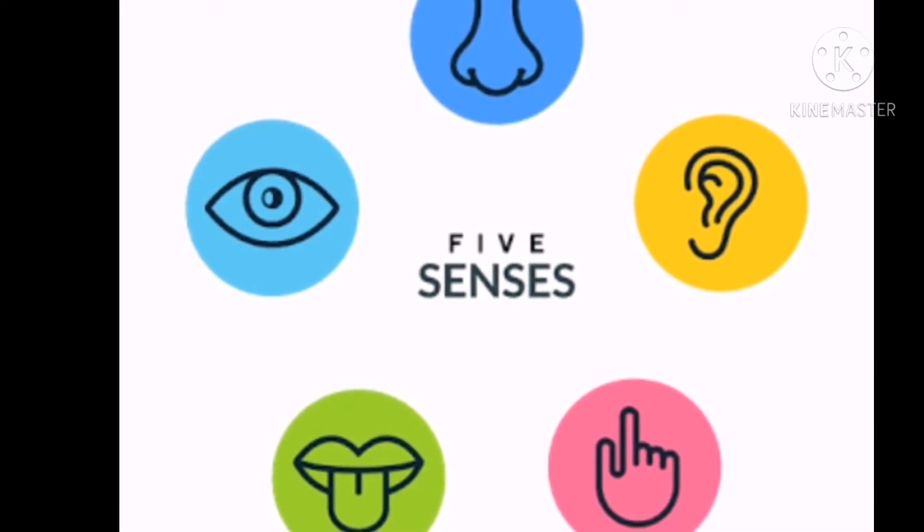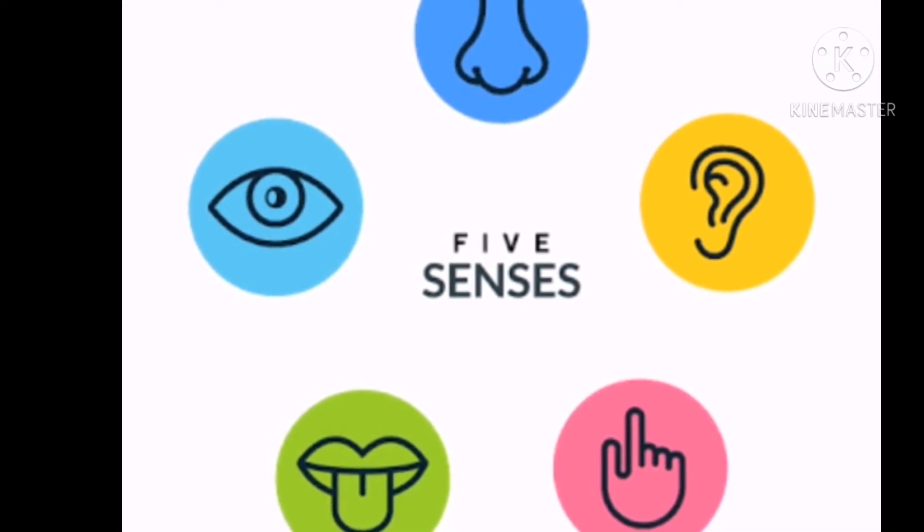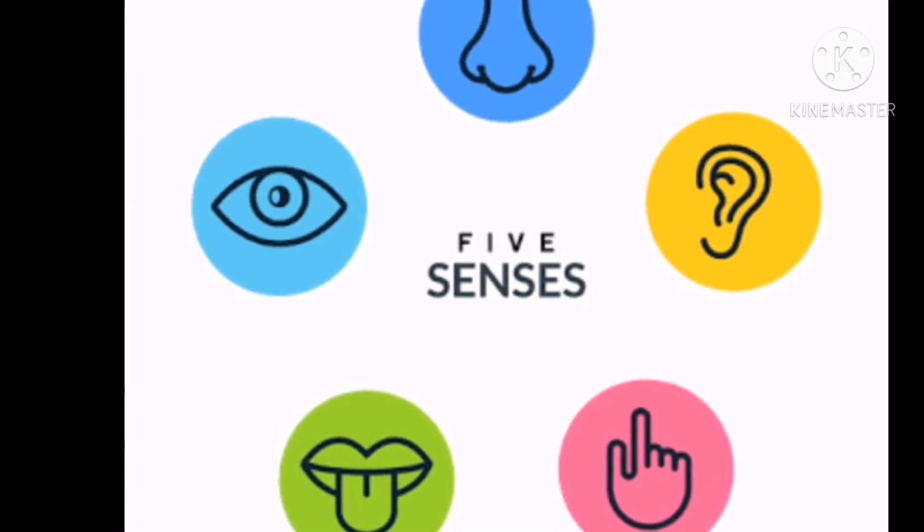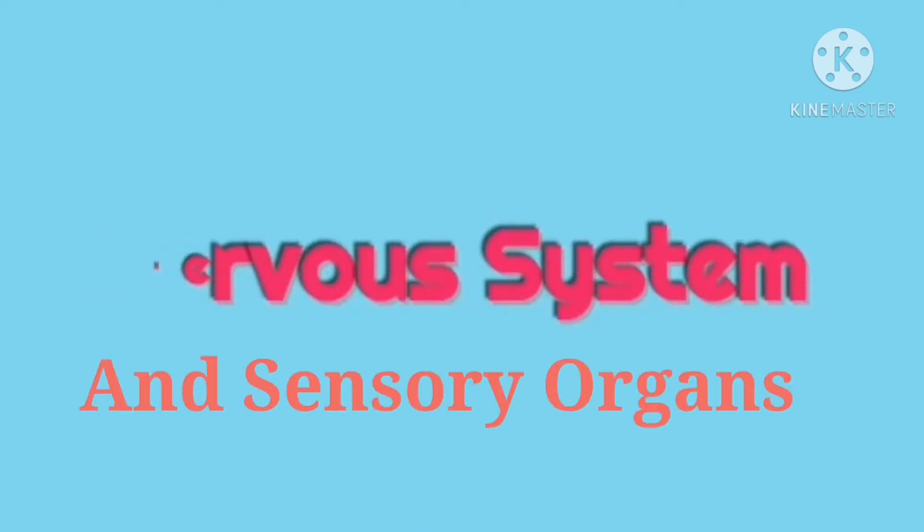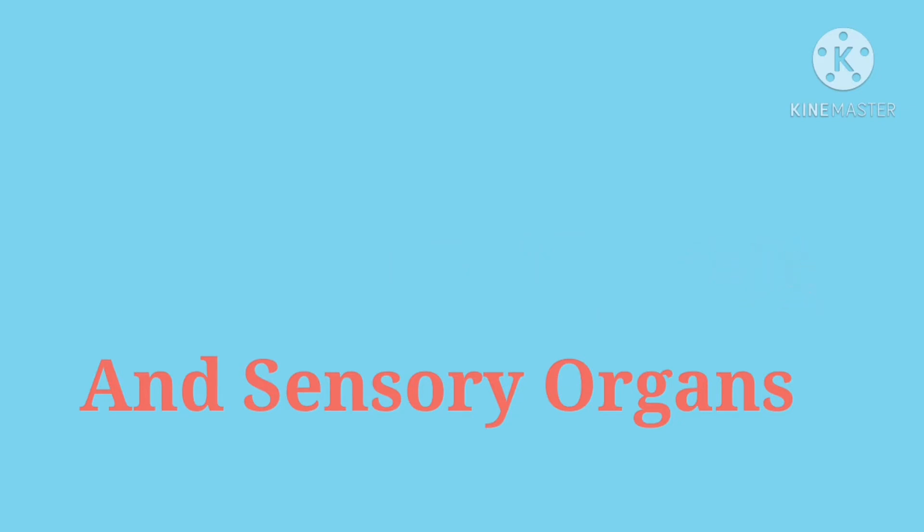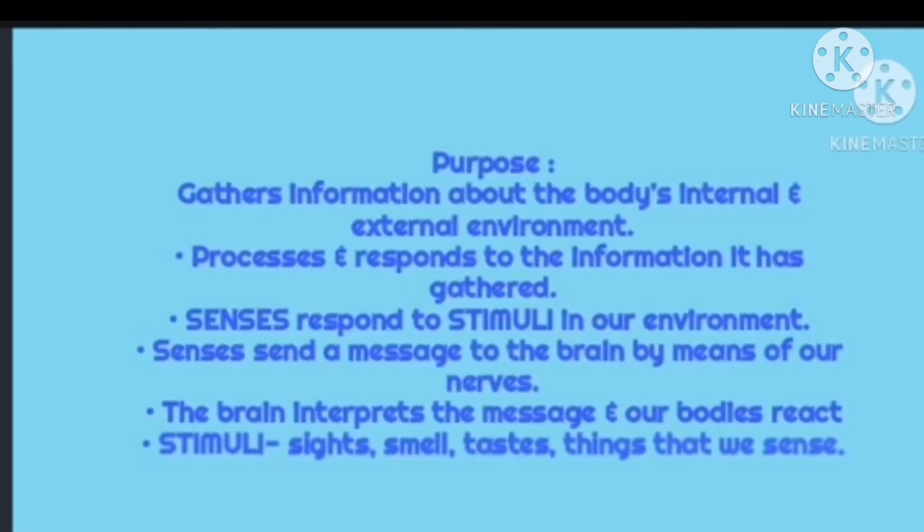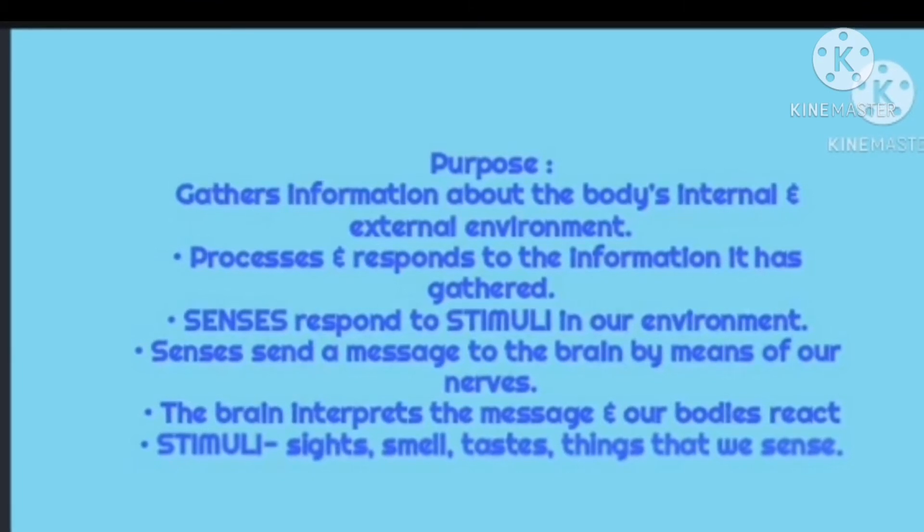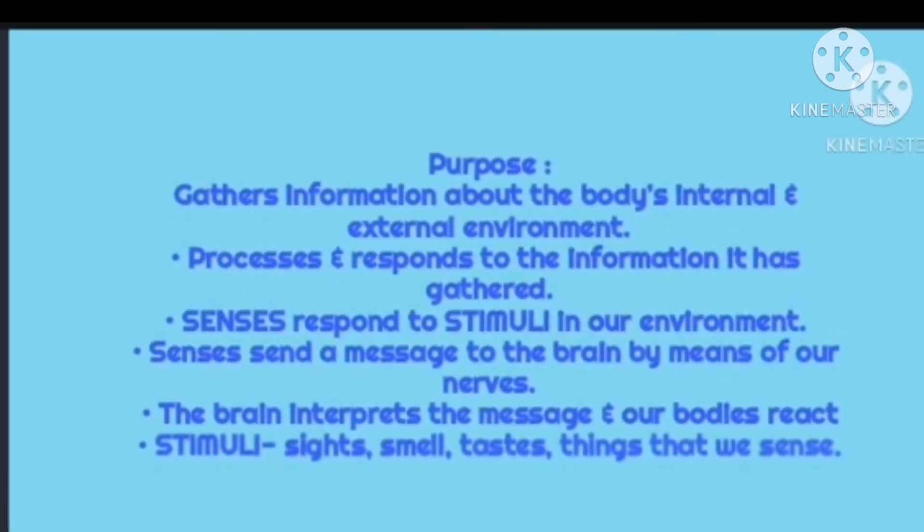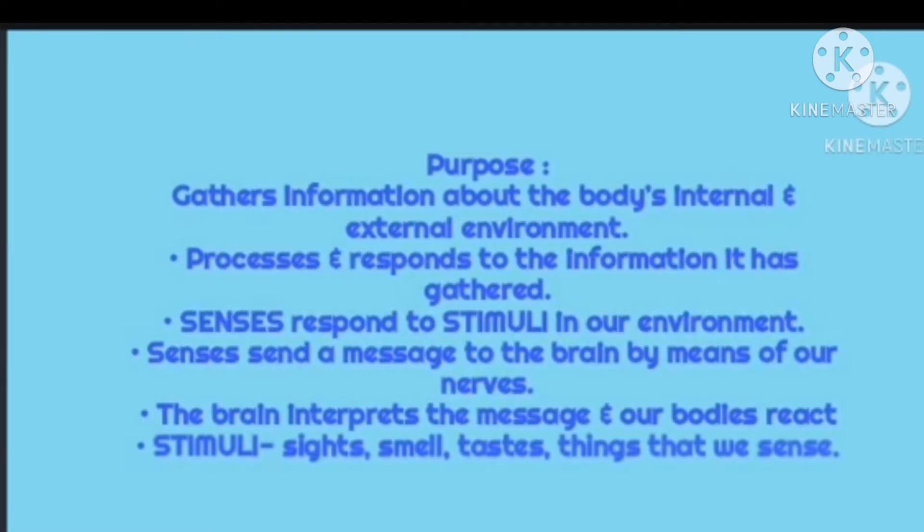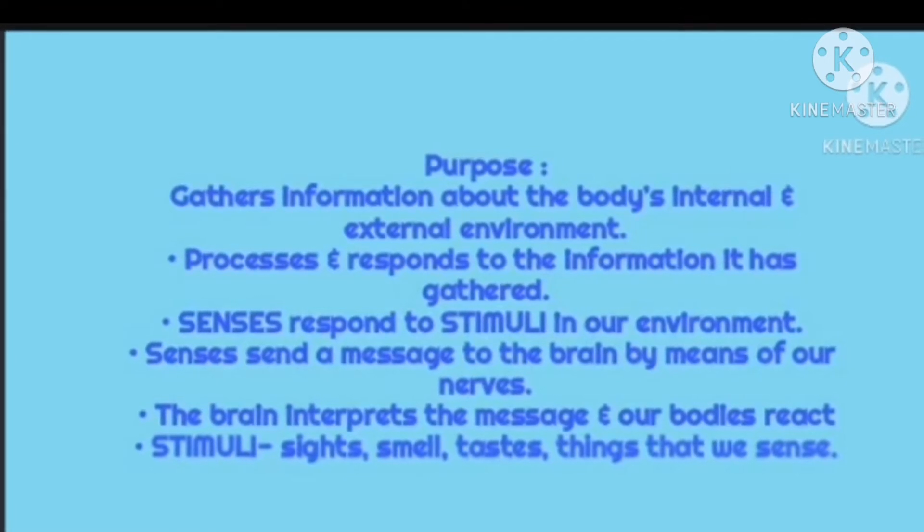The nervous system and sensory organs help the body to receive stimuli from the environment and react to it. It means we get energy or feeling through it. There are five sensory organs: sight, hearing, taste, touch, and smell. Let me discuss the purpose briefly.